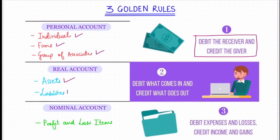Real account includes transactions related to assets and liabilities. The rule says: debit what comes in and credit what goes out. For instance, you purchase furniture for rupees 2000 in cash — what comes into the business is the furniture, so that will be debited, and the cash is going out, so the cash account will be credited.